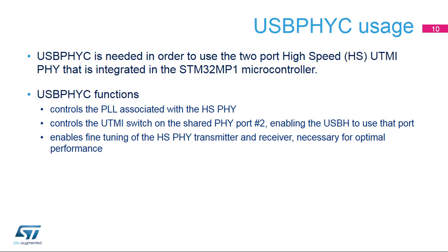USB-PHY-C is a small controller needed whenever the high-speed PHY will be used. It is to be used for controlling the PLL inside the high-speed PHY and enabling the USBH controller access to its second port. Fine-tuning of the high-speed PHY should also be done by using USB-PHY-C. This is necessary to get notably a well-adjusted eye diagram.